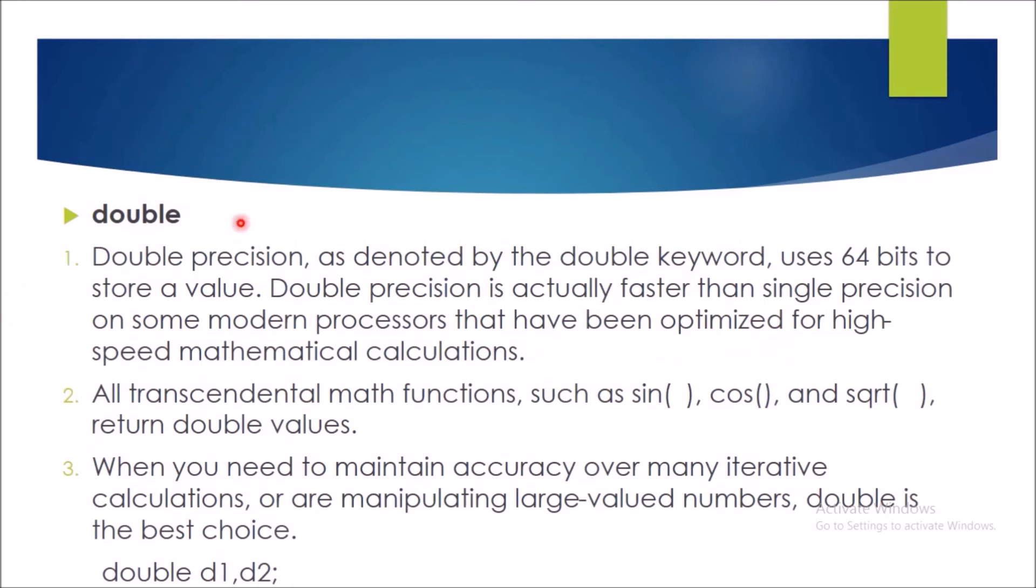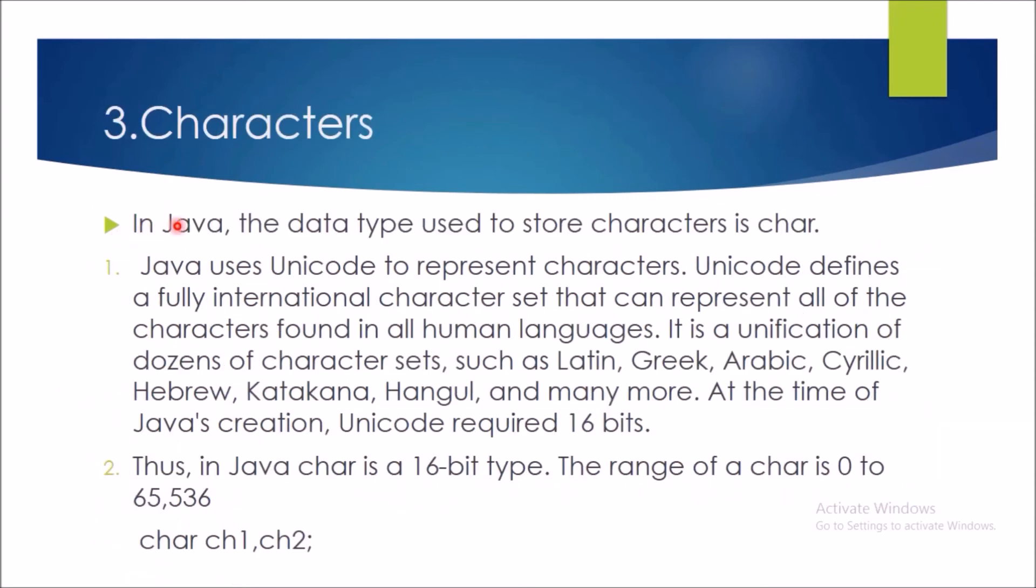So, in double, if you require a very large accuracy, then you must use this double precision. It is denoted by double and declared in this way. It is a 64-bit floating pointer data type. All the transcendental functions such as sine, cosine and square root all return the double values. So, we will get to the next one.